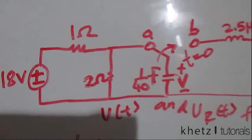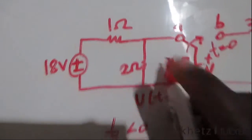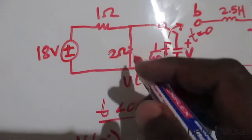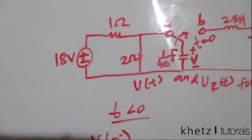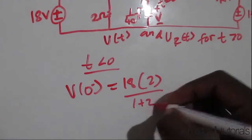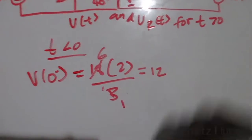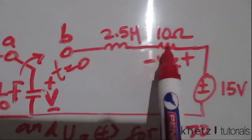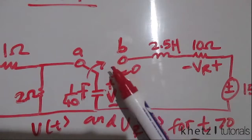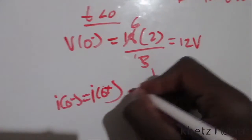For t less than zero, we assume the circuit has reached steady state, so the inductor becomes a short circuit and acts as an open circuit here. This open circuit is in parallel with the two-ohm resistor, so to find the initial capacitor voltage we find the voltage across that resistor using voltage division: with three ohms and three ohms dividing 18V, the initial capacitor voltage is 12 volts. The initial inductor current at t less than zero is zero, because the circuit is not closed, so i(0⁻) = i(0⁺) = 0 amperes.